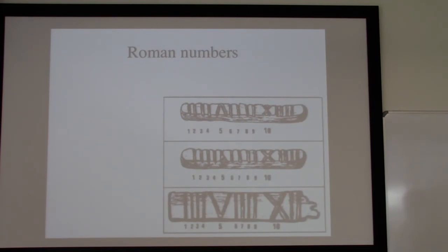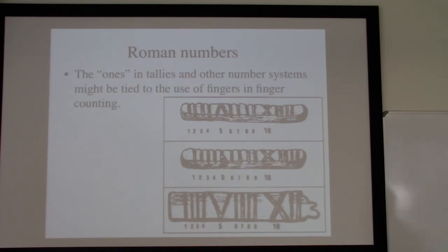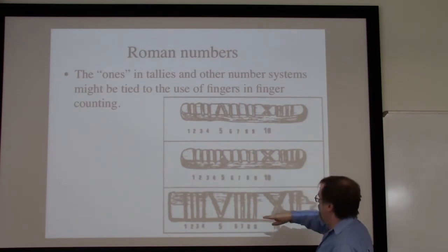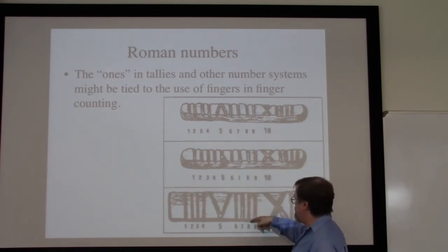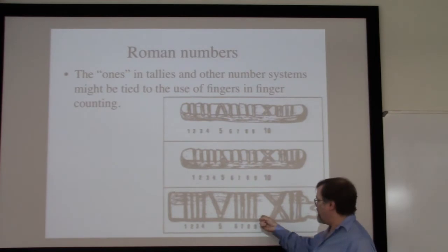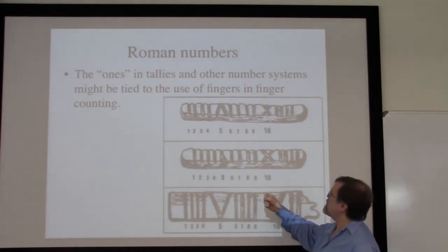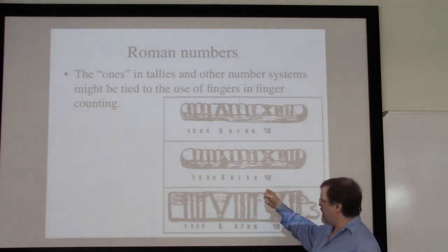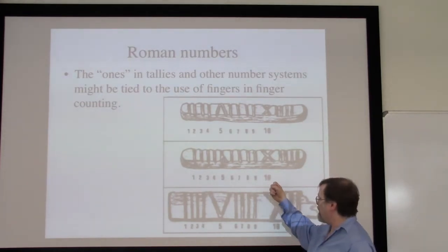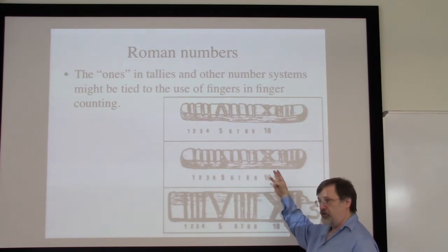Let's take a look again at the Roman numbers as an example of these tally marks. Here are some tally marks from the Roman era — we can see these striations, these symbol lines. Having spent some time looking at hand signals, I hope you appreciate that it's very likely that these smaller numbers for counting in Roman numerals — using just lines — are very possibly descended from using the fingers for one, two, three, and four.